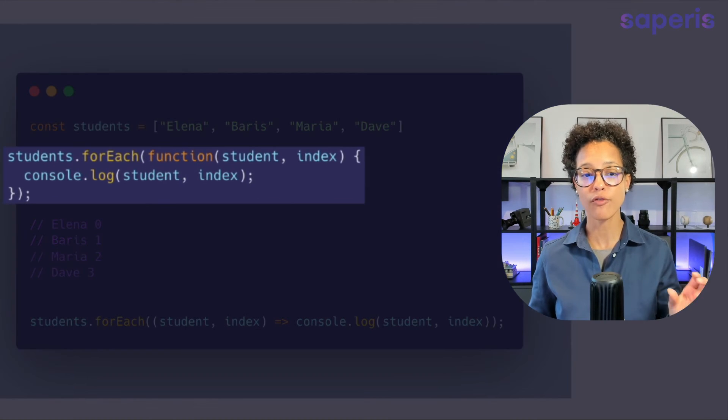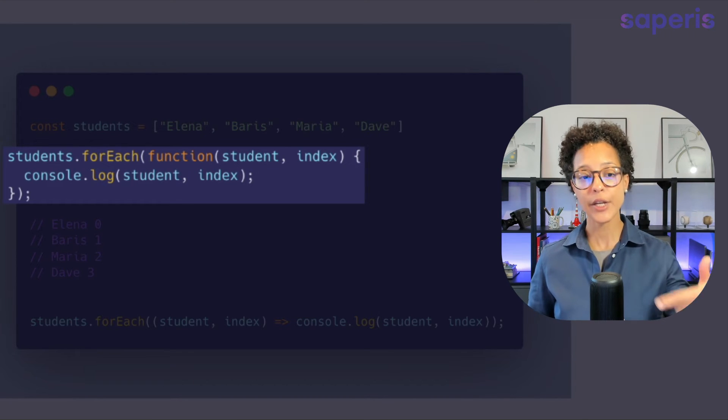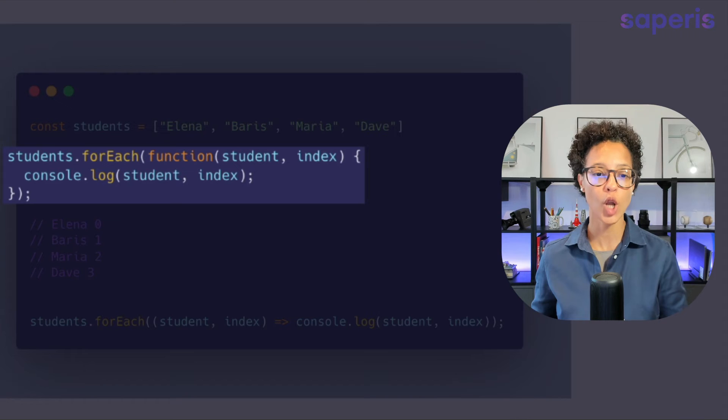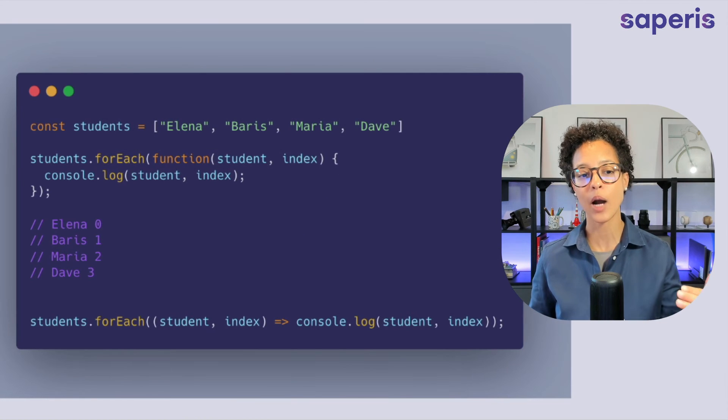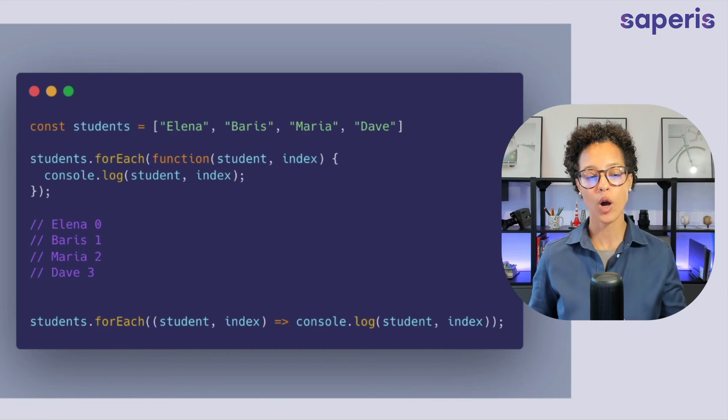So note how here on our forEach the function we're passing into that method we have student and then comma index. So that is the optional index and here I'm just showing you how you could use this to log this out. So that's where you see the output will be Elena and zero because that's index zero and so on and so forth.